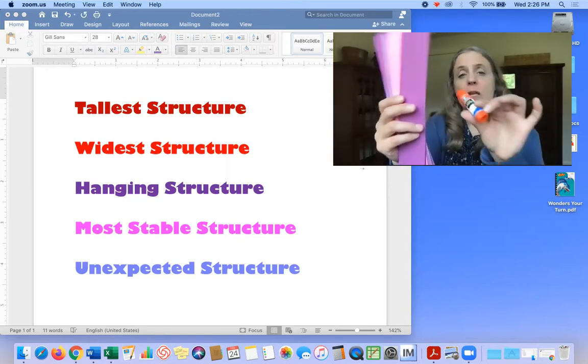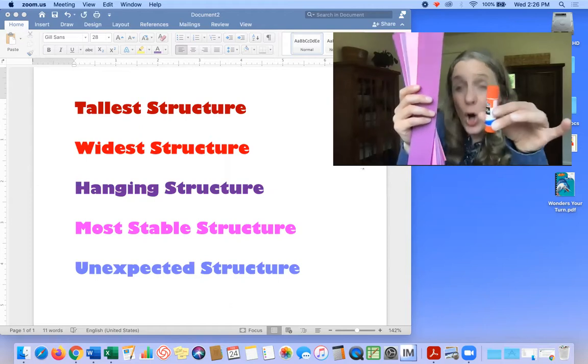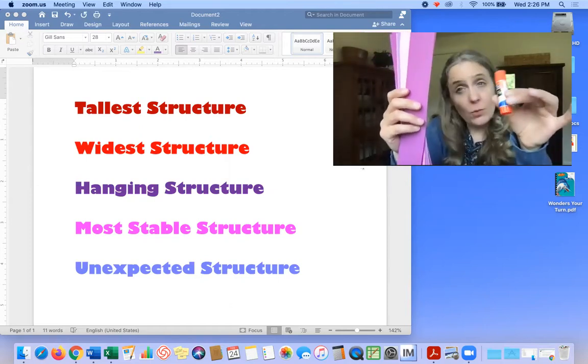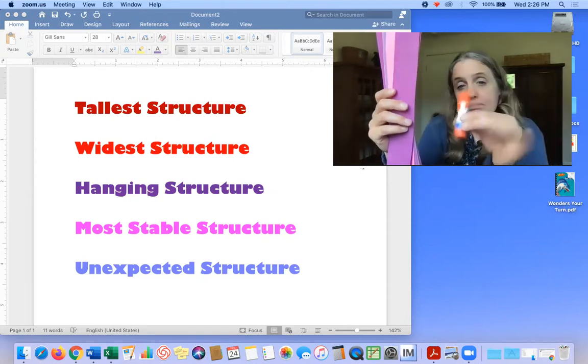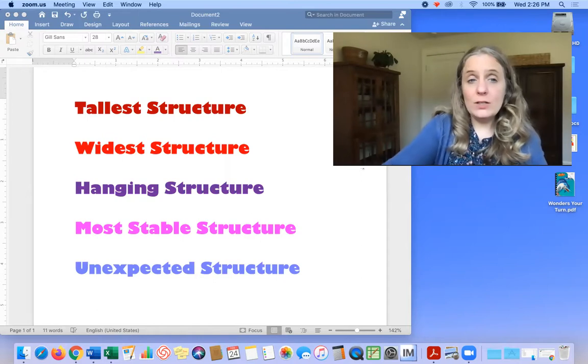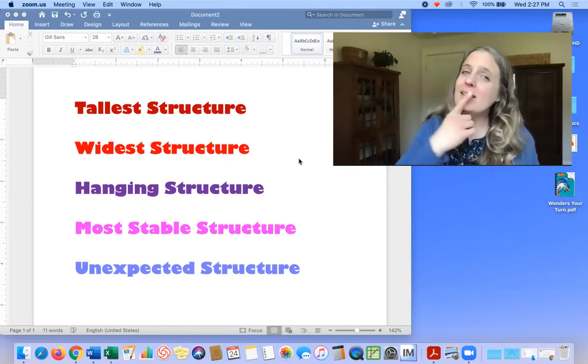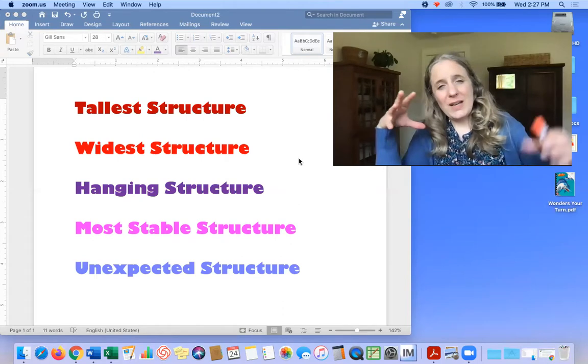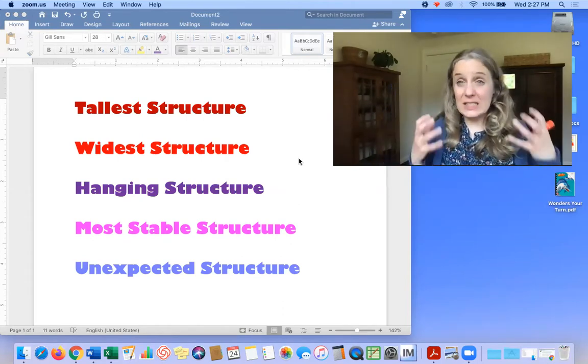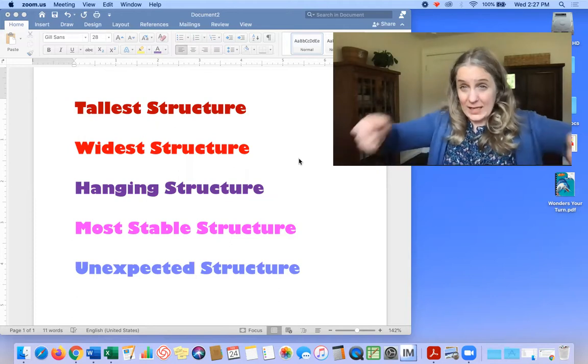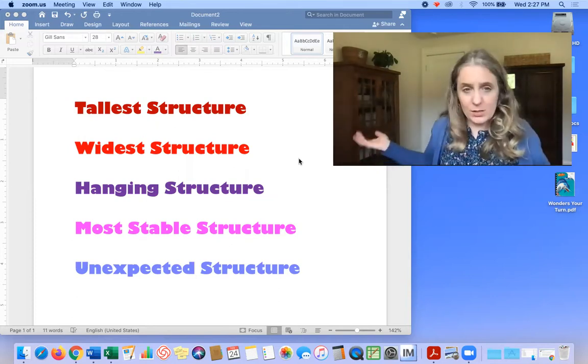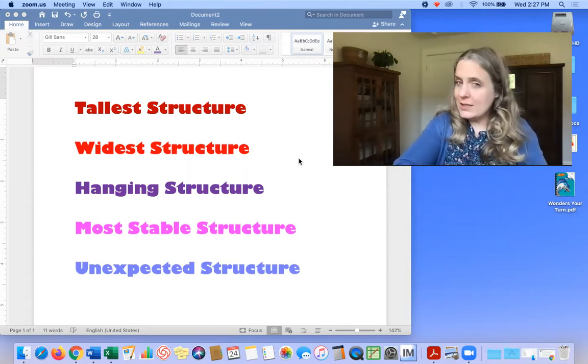Or yarn or whatever. But glue and strips. Also, if you have a stapler and you'd rather use a stapler, you're welcome to do that. But if not a stapler, glue and strips. And I'm going to show you what you need to do. So you're going to pick, am I going to try to figure out the tallest structure? Am I going to make the widest structure? Am I going to make a hanging structure? The most stable structure? So like if I put it on a table and shook the table, it would not fall. It would not fall apart.